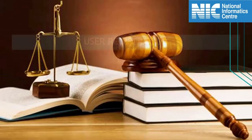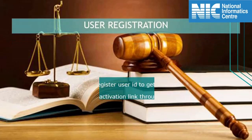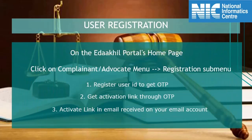To become a registered user, go to the eDaakhil portal's homepage and click on the registration sub-menu under the complainant advocate menu. First, register a user ID to get an OTP, then get the activation link through OTP, and finally activate the link in the email received on your email account.